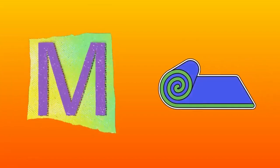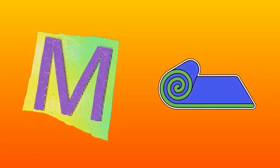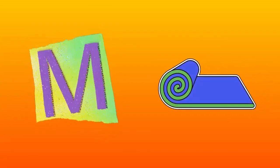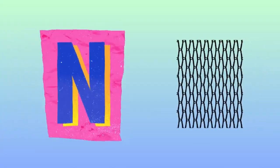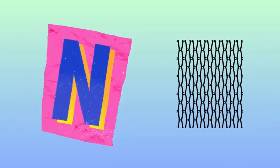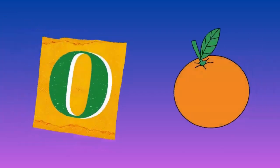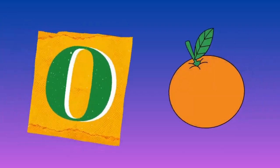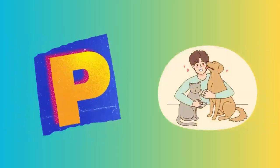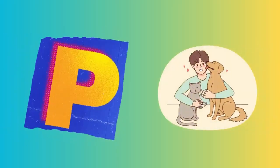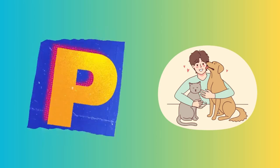M is for mat, m-m-mat. N is for net, n-n-net. O is for orange, o-o-orange. P is for pet, p-p-pet.